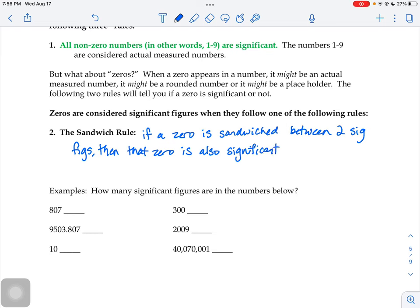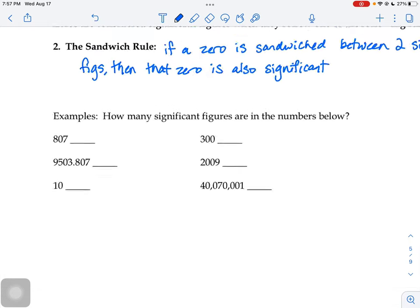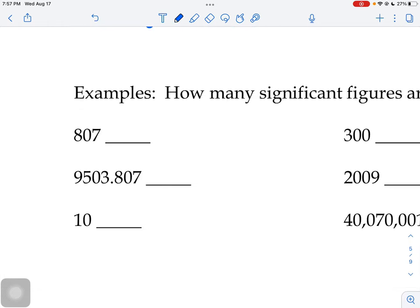If you had these measurements, let's say all of these represent centimeters, we put a ruler up to various objects and measured them. If you took this measurement and you got 807 centimeters, remember how we said anything that's not a zero we're going to count as being a significant figure.